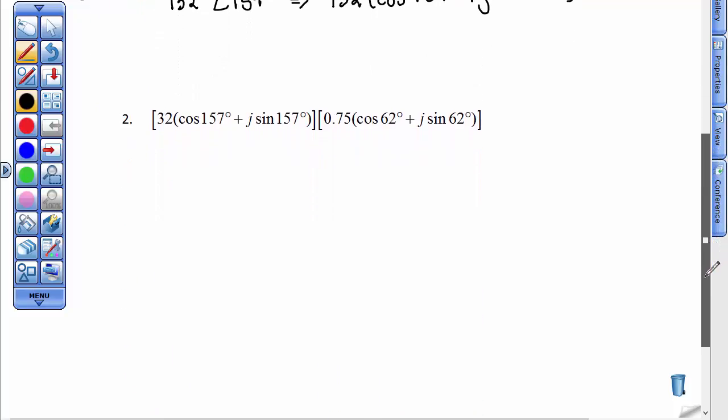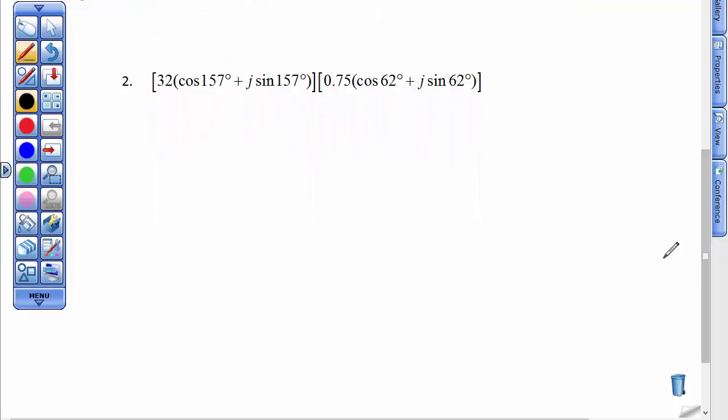Go ahead, stop the video, do this one real quickly. Again, you multiply the r values, and then you add the angles, and 32 times 0.75 is 24, and 157 plus 62 is 219°. All done.